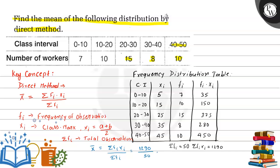So now we will get x̄ equal to 1290 divided by 50, which equals 25.8. So finally, the mean is x̄ equal to 25.8. This is the final answer for the given question. I hope you understood the solution. Best of luck, thank you.